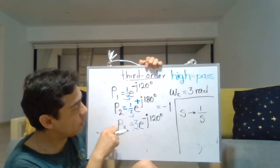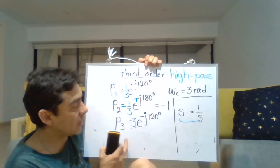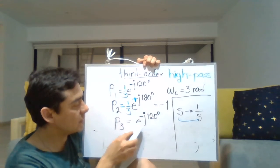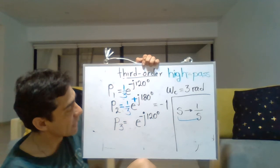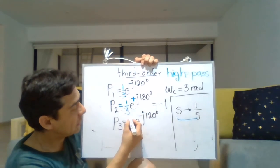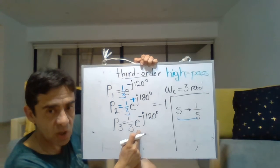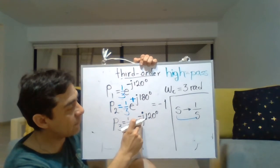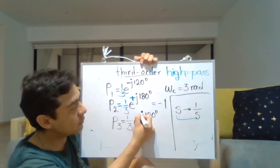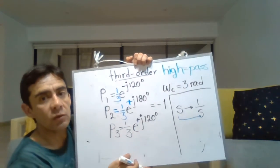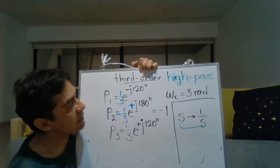Now for the third pole: applying the low-pass to high-pass transformation means taking the inverse. The magnitude changes from 3 to 1 over 3, and the negative of minus 120 becomes 120 degrees. So those are the poles of the third-order high-pass filter after applying the transformation.